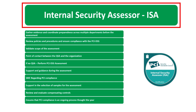The last ISA responsibility on our list is ensuring that PCI compliance is an ongoing process throughout the year. We don't want an organization that is only PCI compliant at the time of the assessment — that is simply not secure and not the intent of the standard. From January 1st to December 31st, compliance must be maintained year-round, not just at assessment time.